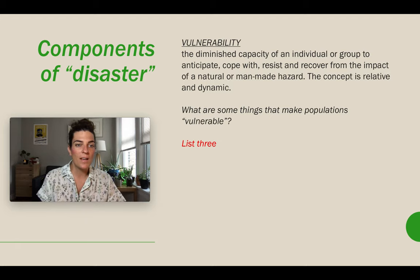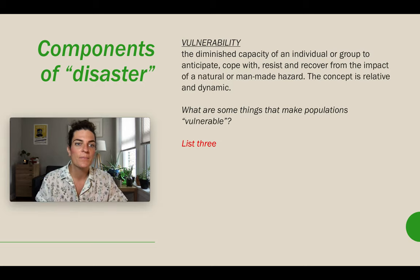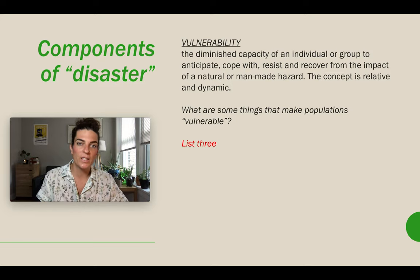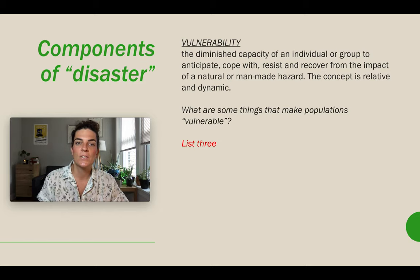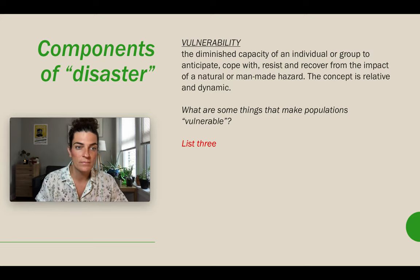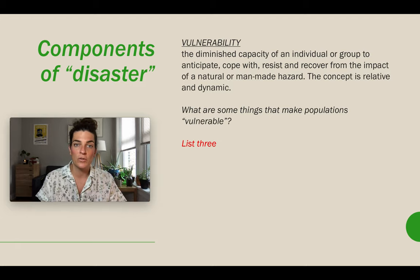So: vulnerability. Hopefully you still have those pieces of paper from the previous lecture about nature. I want you to add now to that list your answers to the next three slides. Let's talk about what vulnerability, hazards, and capacity actually are. Vulnerability is the diminished capacity of an individual or group to anticipate, cope with, resist, and recover from the impact of a natural or man-made hazard. The concept is relative and dynamic. What are some things — maybe three — that make populations vulnerable? We'll discuss these in the Zoom, but I want to see what you think first.